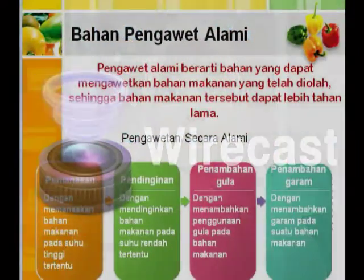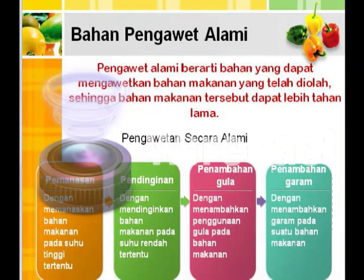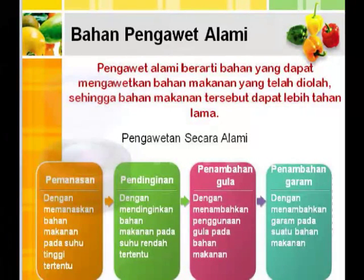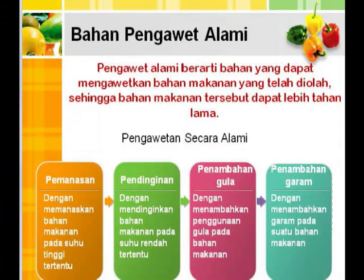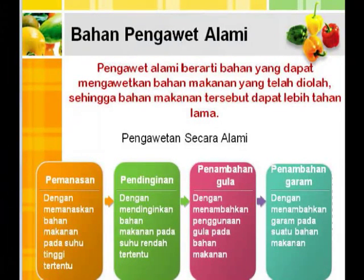Bahan pengawet alami yaitu bahan yang dapat mengawetkan bahan makanan yang telah diolah, sehingga bahan makanan tersebut dapat lebih tahan lama. Pengawetan secara alami biasanya dilakukan dengan cara pemanasan, yaitu dengan memanaskan bahan makanan pada suhu tinggi tertentu; pendinginan, yaitu dengan mendinginkan bahan makanan pada suhu rendah tertentu; dan penambahan gula maupun penambahan garam.